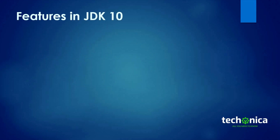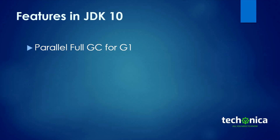Let's discuss the major features in JDK 10. The first is the parallel full garbage collector for G1. G1 was added as the default garbage collector in Java 9. The G1 garbage collector was actually designed to avoid full collections, but when concurrent collections can't reclaim memory fast enough, a fallback full garbage collection will occur — meaning we cannot avoid a full garbage collection sometimes.